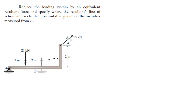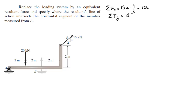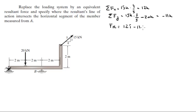For this problem, the sum of the forces in X equals 15k times 4/5, which comes out to be 12k. The sum of the forces in Y equals 15k times 3/5 minus 20k, which comes out to be negative 11k. So the resultant force comes out to be 12 in the i minus 11 in the j.